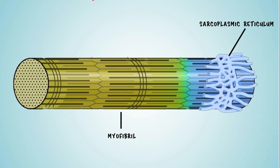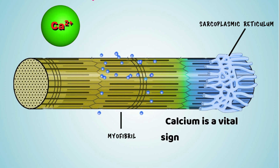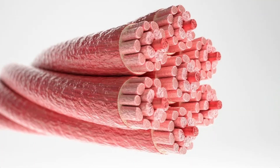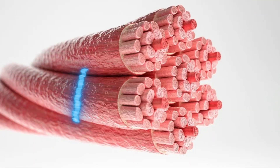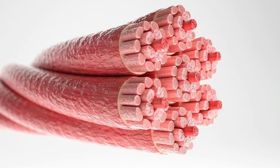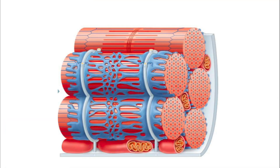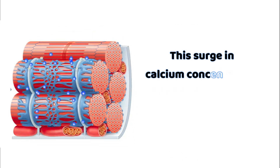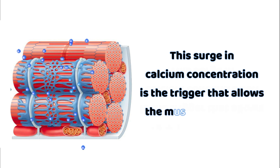One of the ER's primary functions in muscle cells is the storage and release of calcium ions. Calcium is a vital signaling molecule in muscle contraction. When a muscle needs to contract, it sends an electrical signal that travels deep into the cell, ultimately reaching the smooth endoplasmic reticulum. Upon receiving the signal, the smooth ER releases a flood of calcium ions into the muscle cell's interior. This surge in calcium concentration is the trigger that allows the muscle to contract.